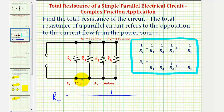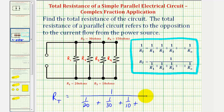Since R sub 1 is equal to 20 ohms, our first fraction would be 1/20, plus the reciprocal of R sub 2 which is 1/30, plus the reciprocal of R sub 3 which is 1/10, and finally plus the reciprocal of R sub 4 which is 1/150. Now we want to simplify this, so for our first step we'll add these fractions by obtaining a common denominator. Let's simplify this on the next slide.